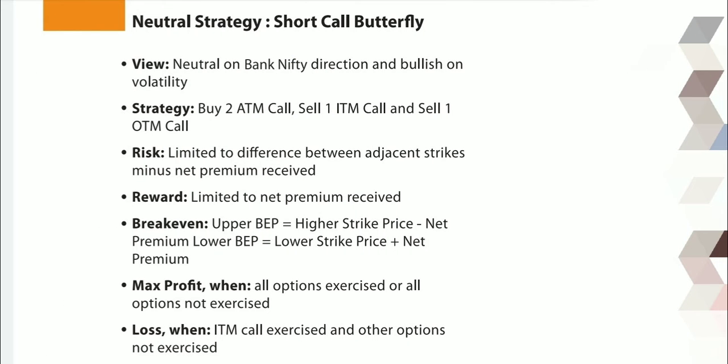Neutral strategy: Short Call Butterfly. In this, your view is neutral on Bank Nifty direction and bullish on volatility. This means your view is sideways to bullish. In short, we can say sideways to bullish strategy. Buy 2 ATM calls, sell 1 ITM call, and sell 1 OTM call.